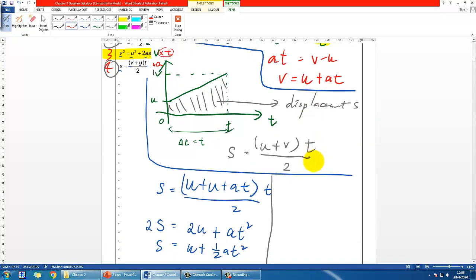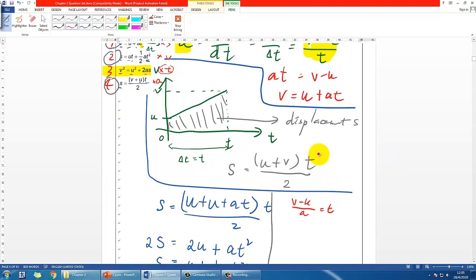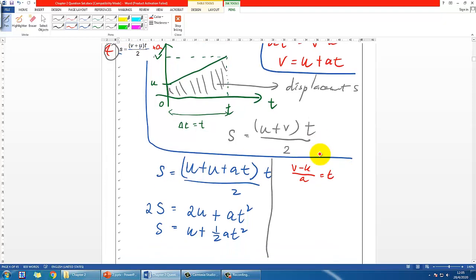Take equation 1 again and express T in terms of other variables: T = (V - U)/A. Then grab another equation and substitute. Let's substitute into equation 4: S = (V + U)T/2. Replace T with (V - U)/A, giving S = (V + U)(V - U)/(2A).